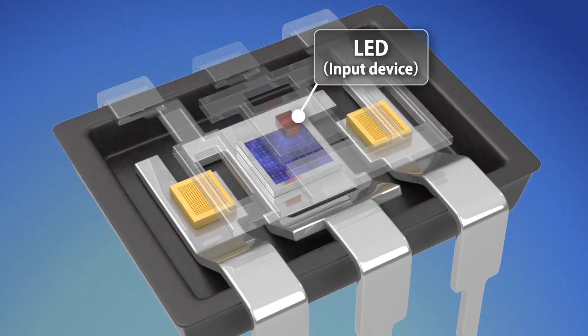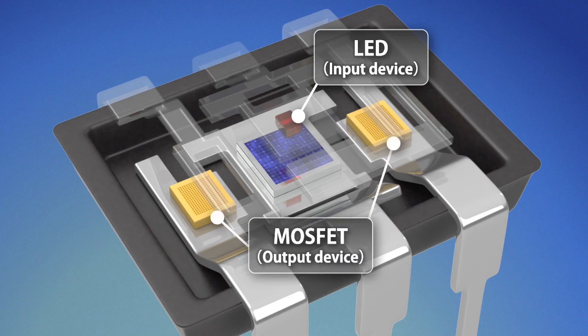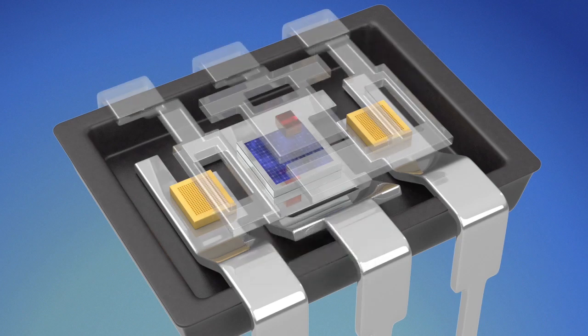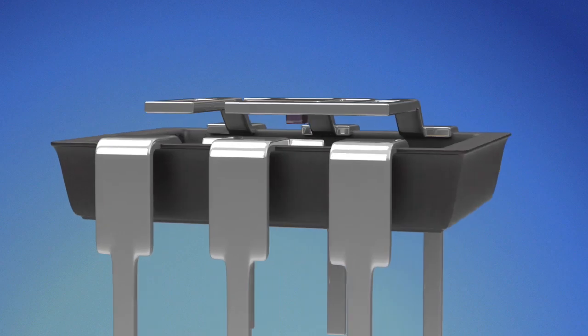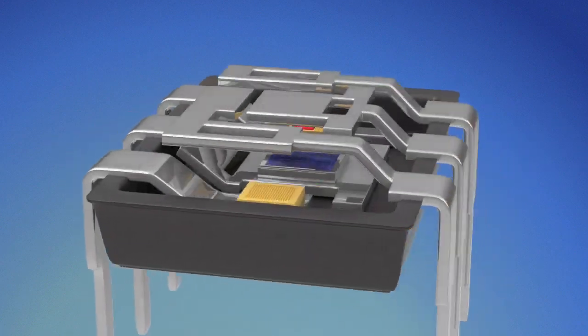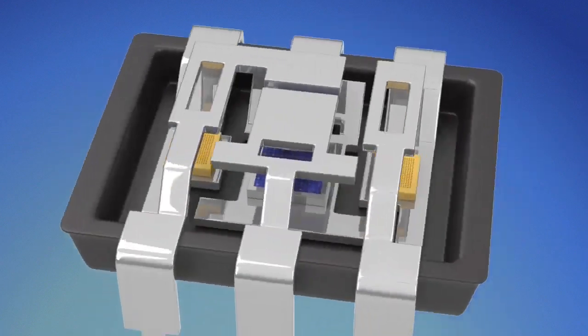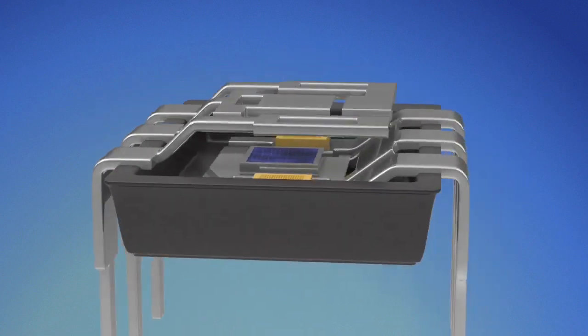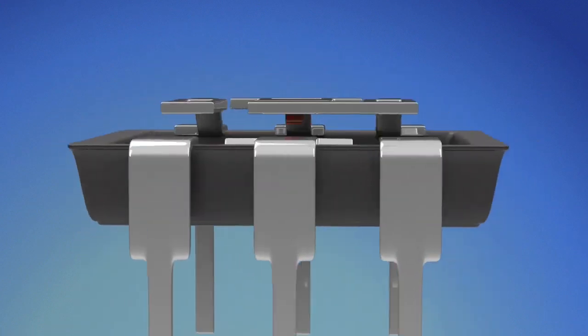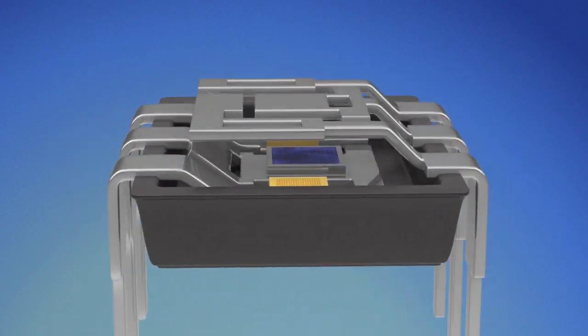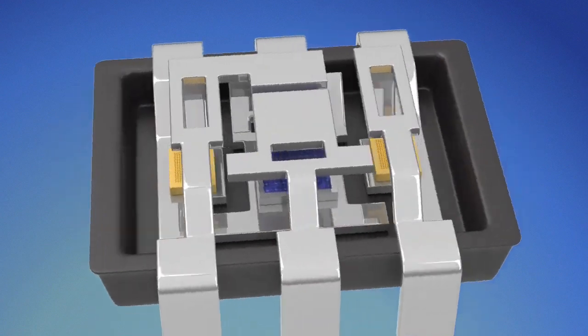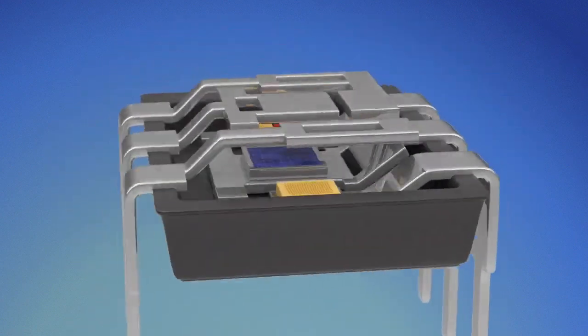A PhotoMOS is a semiconductor device that uses an LED for the input device and a MOS FET for the output device. Unlike mechanical relays, semiconductor devices have no mechanical contacts, so they have benefits such as high switching reliability and long life, along with less sound, high speed operation, small size, and low power consumption.